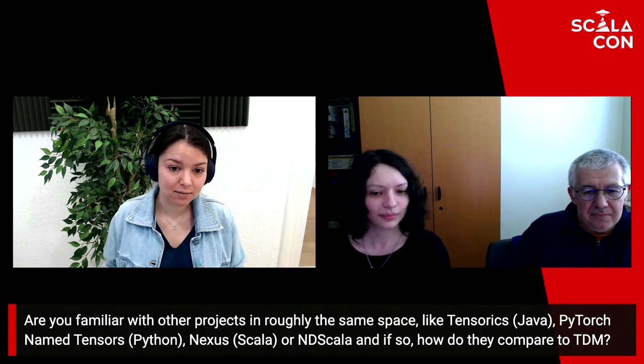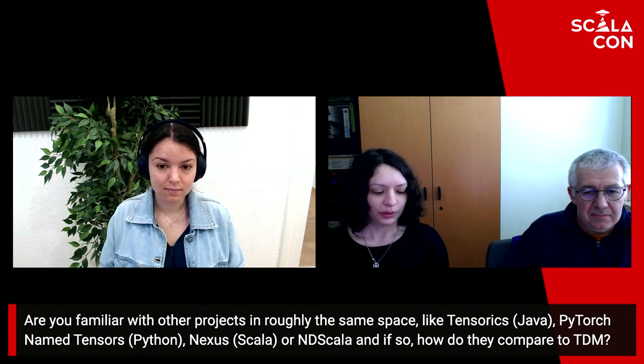Our second question: are you familiar with other projects in roughly the same space, like Tensorics Java, PyTorch named tensors Python, Nexus Scala, or ND4S Scala, and how do they compare to TDM? I have heard about named tensors — they use a String to represent dimensions, so it is not really type-safe because you can easily write the wrong name for a dimension in a string. Nexus I think is more a layer over an existing library. The others I do not know, but with TDM we try to build a new library for data analytics and to give users an easy way to work with tensors, which can be tricky to use in mathematical form.